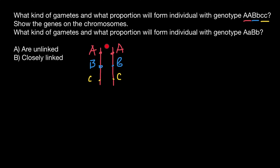In the gamete, we can find either this chromosome or this chromosome, and the ratio is going to be one to one.